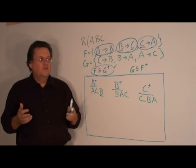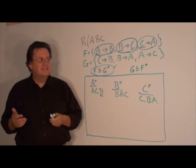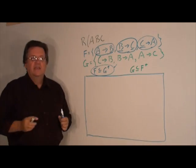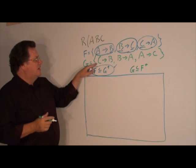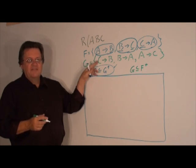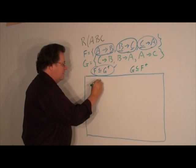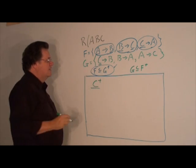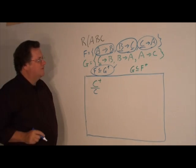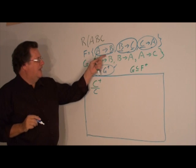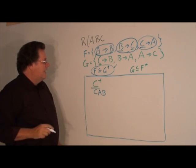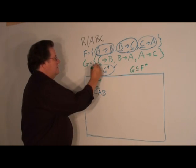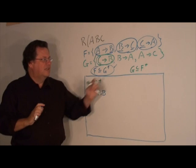We're now halfway done — we've shown that G covers F. We now need to show that F covers G. To do that, we take each functional dependency in G, take the left-hand side, and determine its closure with respect to F. Starting with C closure with respect to F: it includes C by reflexivity, then C→A, and A→B, giving us C, A, B. The right-hand side B is in C closure, therefore C→B is in F closure.